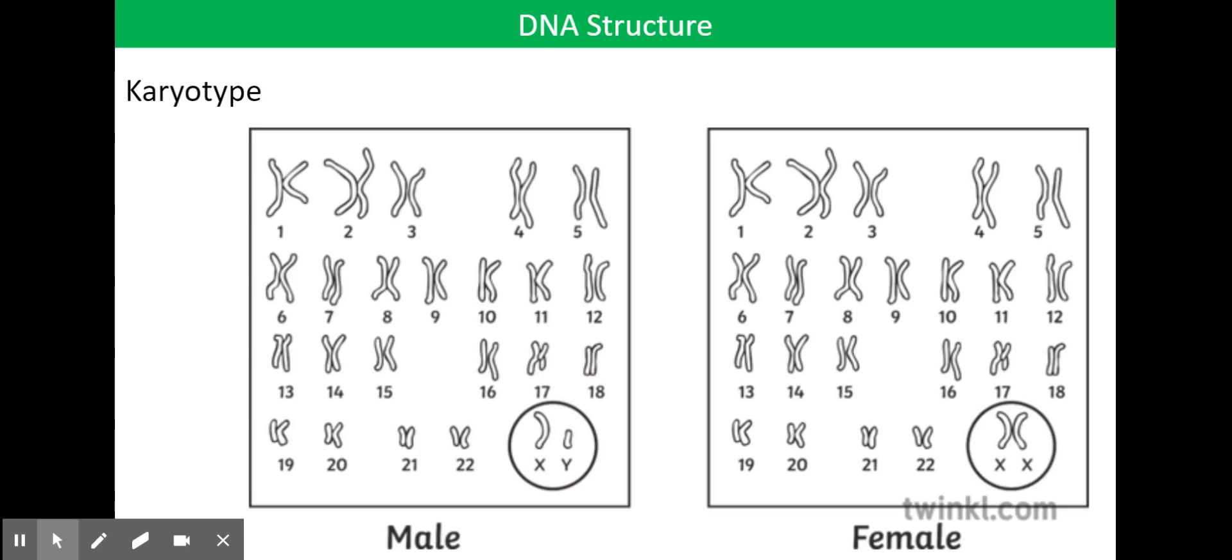Overall, therefore, because we've got two copies of every single chromosome, so we've got two copies of all the chromosomes 1 to 22, and we've got two sex chromosomes, either XY or XX, every single human being has 23 pairs of chromosomes in every single nucleus in every single cell in their body.